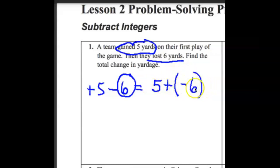Now which one of these numbers has a greater absolute value? Which one is farther away from zero? 5 or -6? That's right, -6. So the answer is going to be negative.